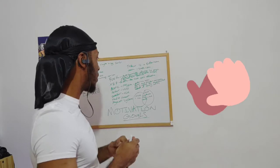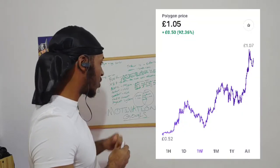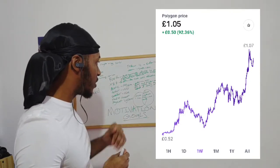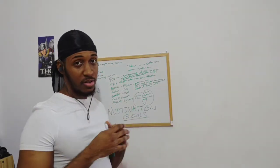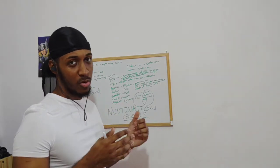Now another way to look at it is you've got something like Matic, which is Polygon. This is actually backed by Coinbase, which is, as you know, a large trader or stock broker or cryptocurrency.